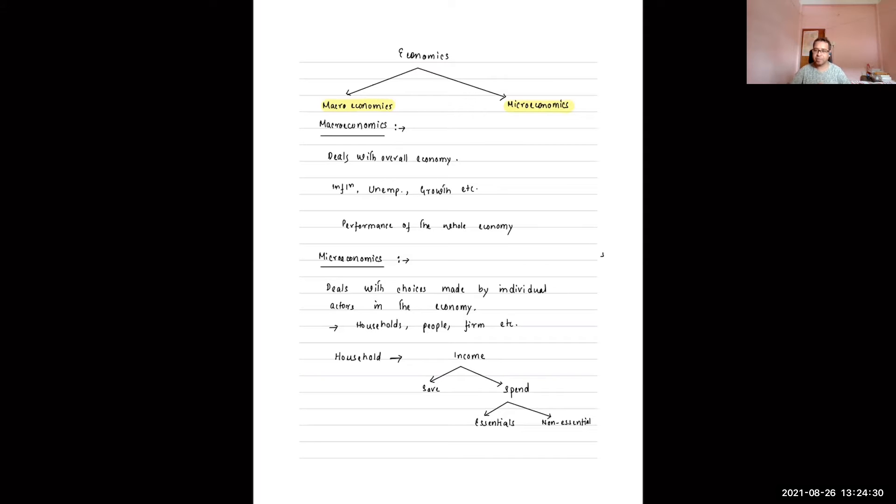Before moving to macroeconomics and microeconomics, let us understand what is economics and what is economy. Economy is the economic activity of a certain region or particular area, like how they are spending their money, how they are earning, their investment. Economics is the study of economy of a particular region. There are certain calculations and graphs, and all this falls under economics.